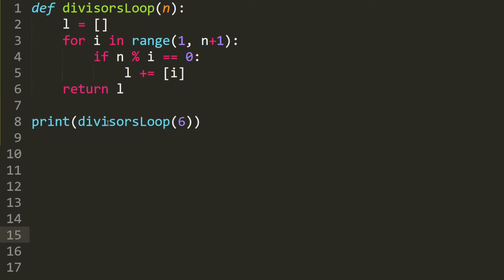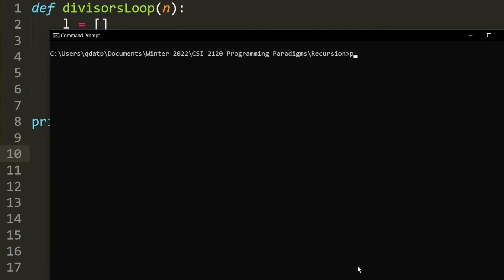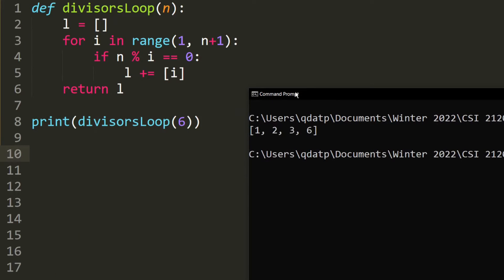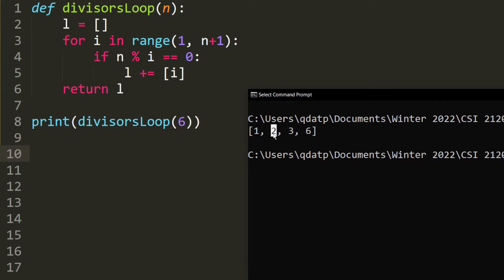And we should test our divisors loop, and we pass in the number 6. So as you can see, the divisors that we found are 1, 2, 3, and 6, which means that our code is correct.